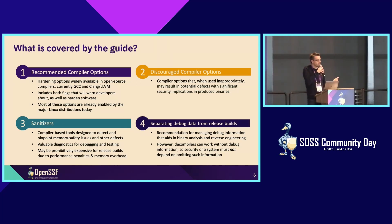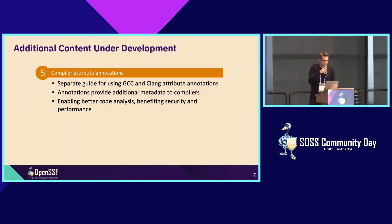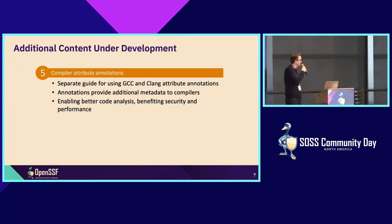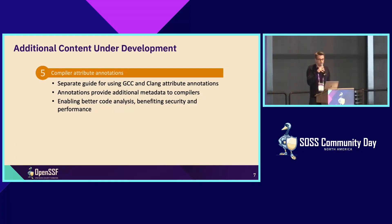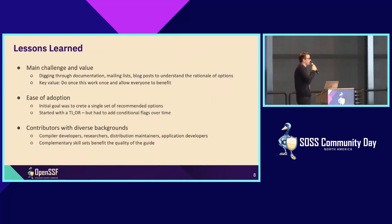We released the first version of the guide at the end of last year. In the meantime, we also started to create a separate document on compiler attribute annotations — a means of telling the compiler more about the program, helping it understand data flows and data types better, so that more efficient optimizations can be performed that benefit both security and performance. This is currently ongoing work, and we're adding more content to the guide throughout.